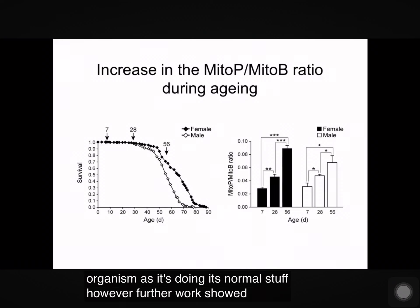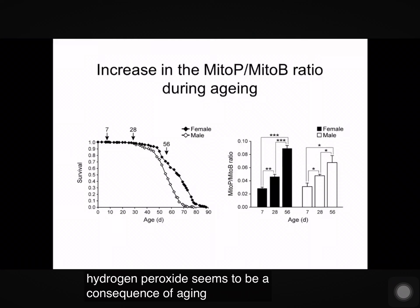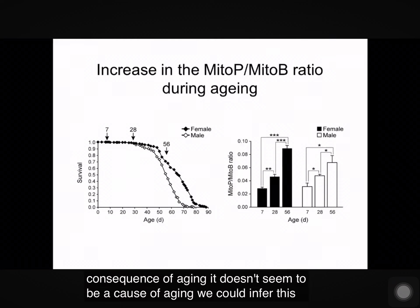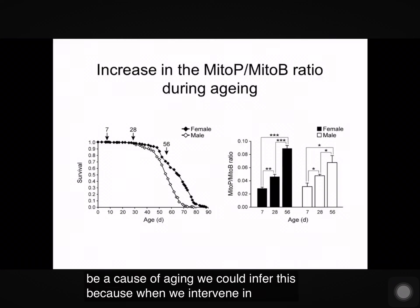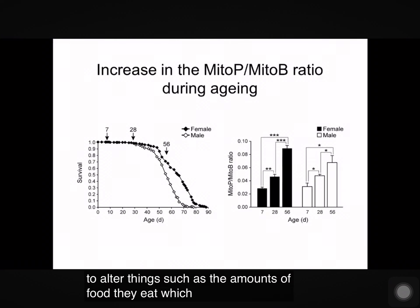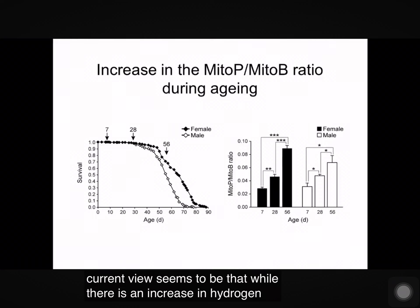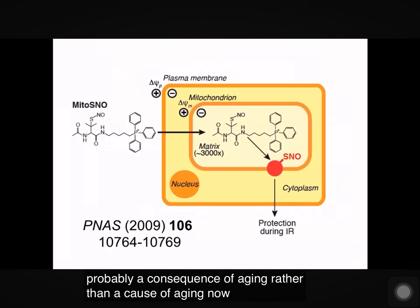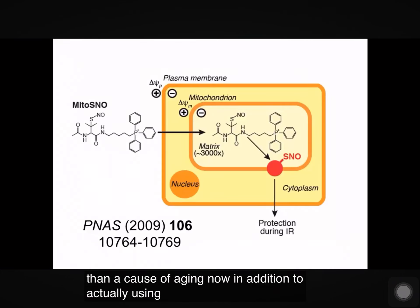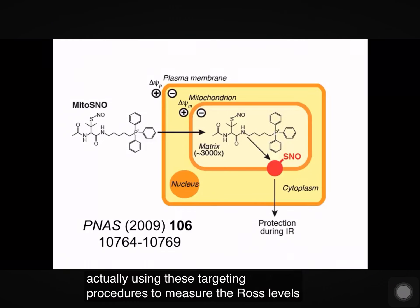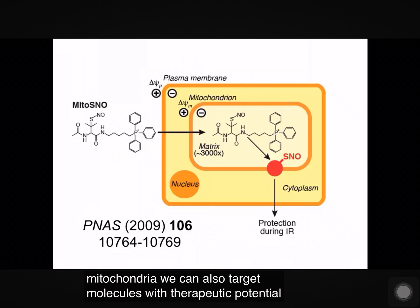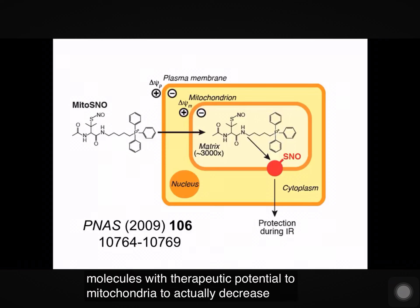However, further work showed that this hydrogen peroxide seems to be a consequence of aging rather than a cause of aging. We could infer this because when we intervene in the flies to alter things such as the amount of food they eat — which alters their lifespan — that does not change the levels of hydrogen peroxide, even though it does change the lifespan. So our current view is that while there is an increase in hydrogen peroxide with aging, it is probably a consequence rather than a cause of aging. In addition to using these targeting procedures to measure ROS levels in mitochondria, we can also target molecules with therapeutic potential to mitochondria to actually decrease ROS production.